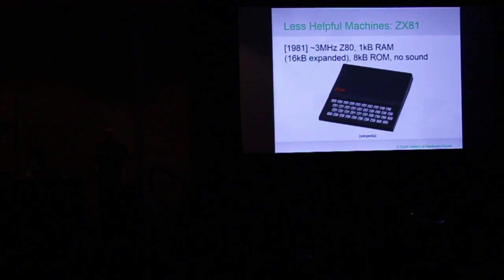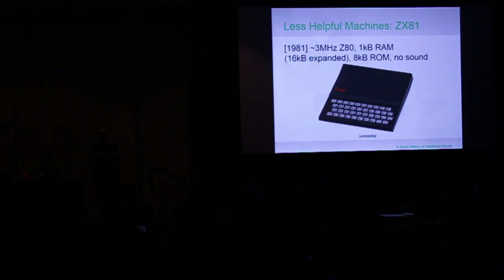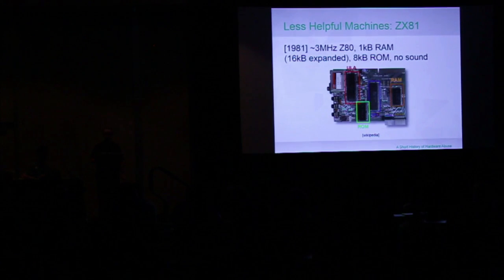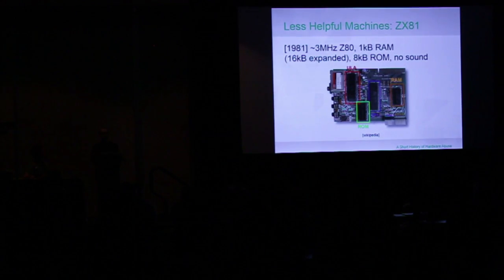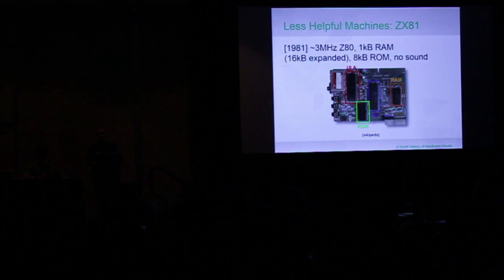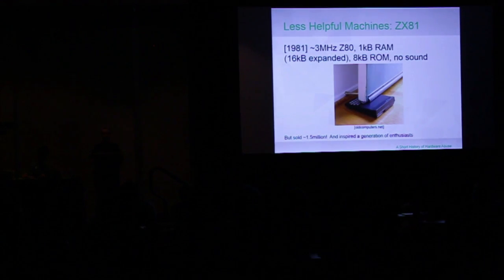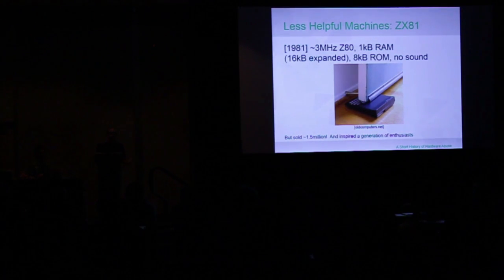There was the ZX81 made by Sinclair — Z80 based, a mere one kilobyte of RAM, no color, no sound. The thing had only four chips on it: a CPU, tiny bit of RAM, the ROM, and a ULA chip. It was ridiculously simple and didn't do very much, but it was really significant because it sold millions and inspired a whole generation — largely in the UK but also the US — of enthusiasts, because this was their first machine. It was stupidly cheap. Who cares that it didn't do anything — they could play around.